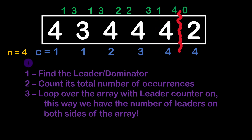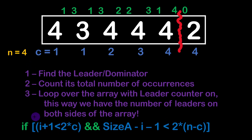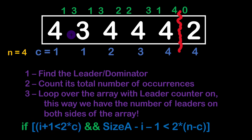Since we have access to all these variables during iteration, our solution formula uses two conditions. First, we test if (i + 1) is less than twice c — meaning the number of occurrences is greater than half the size of the left slice. We write it this way because we're working with integers, and dividing by two can lose precision and give wrong results.